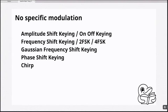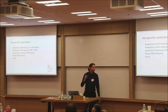Some modulation types are quite sophisticated. For Internet of Things, in most cases those transceivers are designed to be simple and reliable — they don't use complex modulation types like we use in Wi-Fi, LTE, or 5G. The most common ones are ASK (amplitude shift keying), OOK (on-off keying), FSK (frequency shift keying), 2FSK, 4FSK, GFSK (Gaussian frequency shift keying), phase shift keying, and chirp.